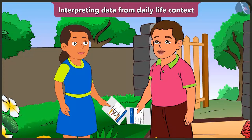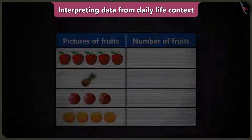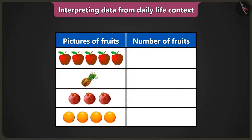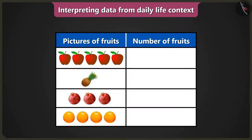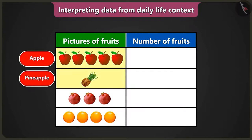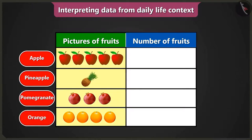Now show me the second table which mummy has given to you. Here it is. There are only pictures of fruits in this table — the number of fruits are not written. So what will you do now? I will go to the kitchen now and count the number of fruits and come back. Stop. You do not have to go anywhere. All the data has been shown in this table. Which pictures are there in the column of fruits? There are pictures of apple, pineapple, pomegranate, and orange.